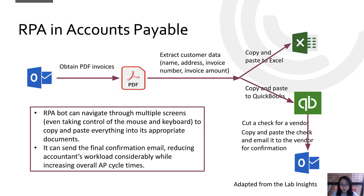In an RPA world, we can mimic this whole procedure. We can build a bot that logs into Outlook and retrieves all the invoices, then performs PDF automation to get the data to different places as needed. We can also add an email step at the end to send anything we want to the vendor.